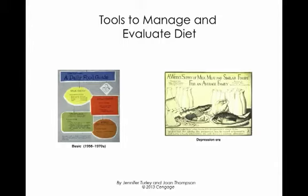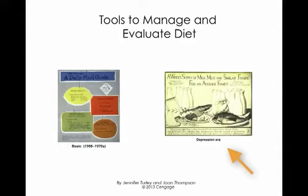On the left here you can see what the recommendations were between 1956 and during the 1970s — the daily food guide. On the right is kind of an assessment of what folks were eating during the depression: pretty low on vegetables and fruit, pretty high on protein.